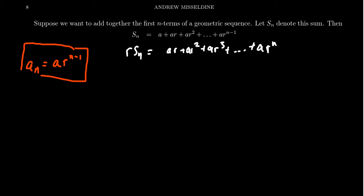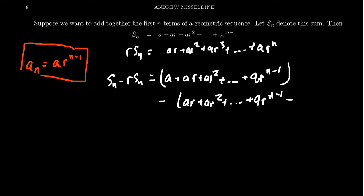What we're going to do next is we're going to subtract these things. So if we take S_n minus R S_n, this is going to look like A plus AR plus AR squared, all the way down to AR to the n minus 1. That's the S_n part. And then if we subtract from it the R S_n part, we're going to get an AR plus an AR squared, all the way down to AR to the n minus 1 and an AR to the n.